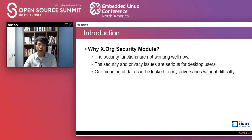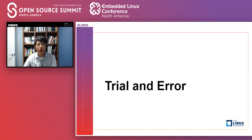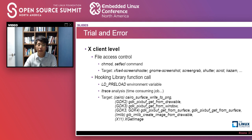The issues are serious for desktop users — our meaningful data can be leaked to any adversaries without difficulty. So I was motivated to develop XSM. In this part, I will show you my journey to solve the privacy issues from X-client and X-server. At first, I didn't know about X.org internals, so I was looking for a solution at the X-client level. I attempted to limit execution of screenshot and screencast files by file access control. But there are so many applications — uncountable, well-known and self-developed — so I thought it is impossible to control all of them.